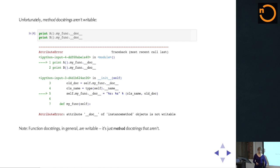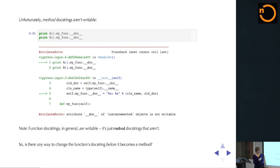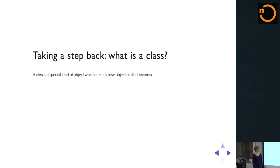I'll note that in general, docstrings are writable for functions — if you just have any random function, that is fine. But in particular for methods, the docstrings aren't writable. So this is a specific problem to classes. So is there a way that we can perhaps change the docstring before the function becomes a method? And the answer is yes.